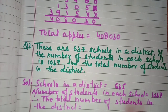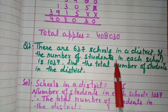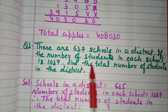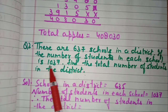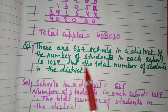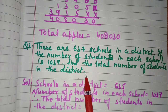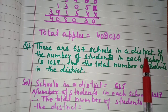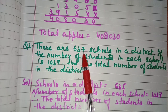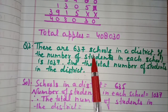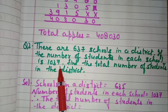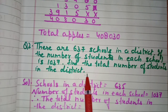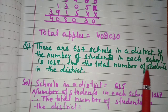Question number two: there are 637 schools in a district. If the number of students in each school is 1037, find the total number of students in the district. So there are 637 schools in the district and 1037 students in each school.